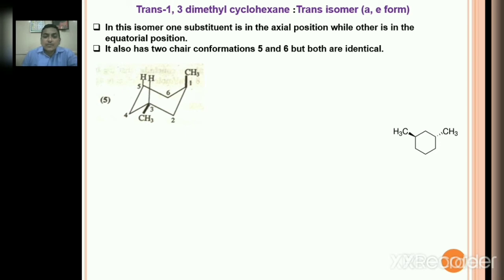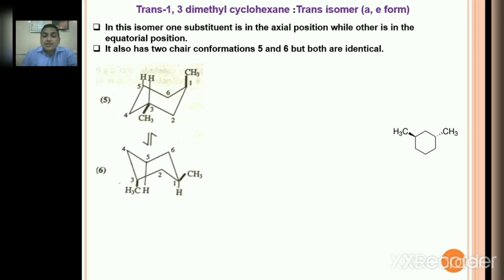What happens after ring flipping? Ring flipping is the conversion of one chair into another chair. In ring flipping, a group which is axial becomes equatorial and equatorial becomes axial. Methyl at C1 is axial — after ring flipping it becomes equatorial. Methyl which was equatorial becomes axial. These are the two conformational isomers, but both conformers 5 and 6 are identical because in both, one methyl is axial and another is equatorial.